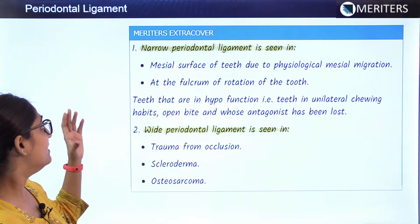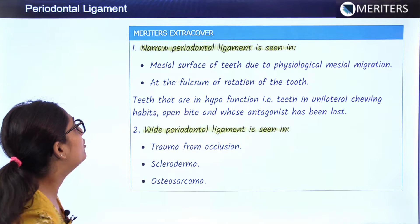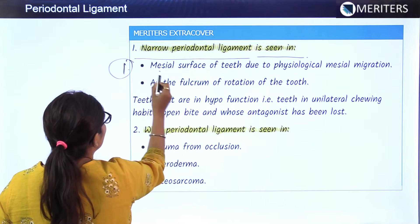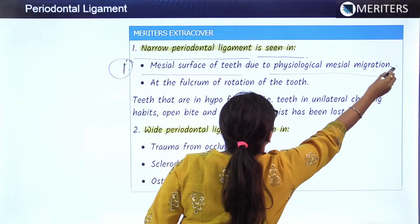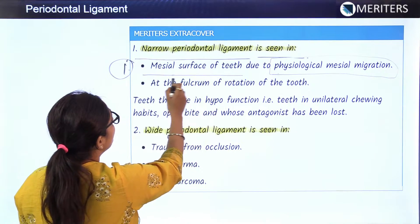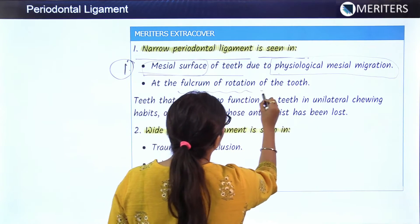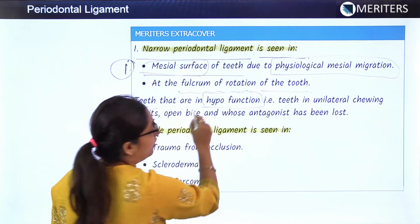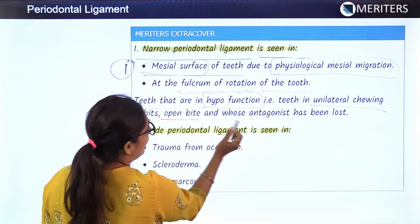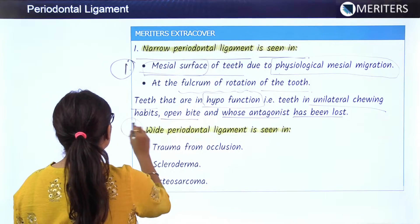Key points regarding the width of the periodontal ligament: a narrow periodontal ligament is seen at the mesial surface of teeth due to physiologic mesial migration, at the fulcrum of rotation, and in teeth that are in hypofunction where forces are very less, such as in conditions like unilateral chewing and open bite, or where the antagonist has been lost.